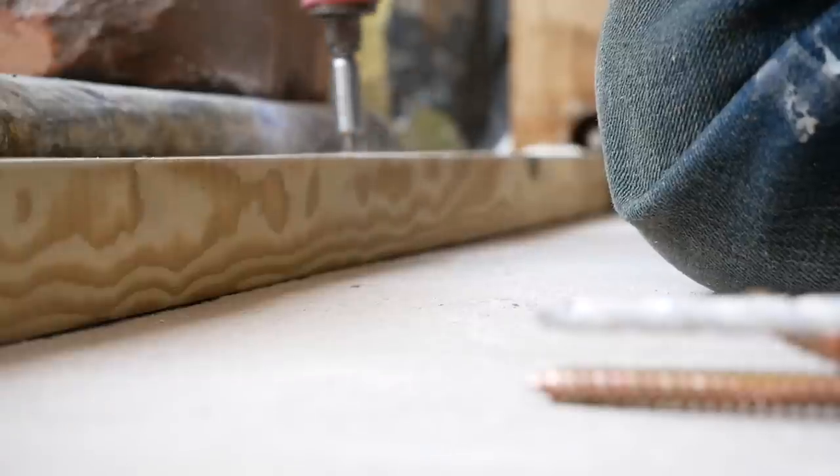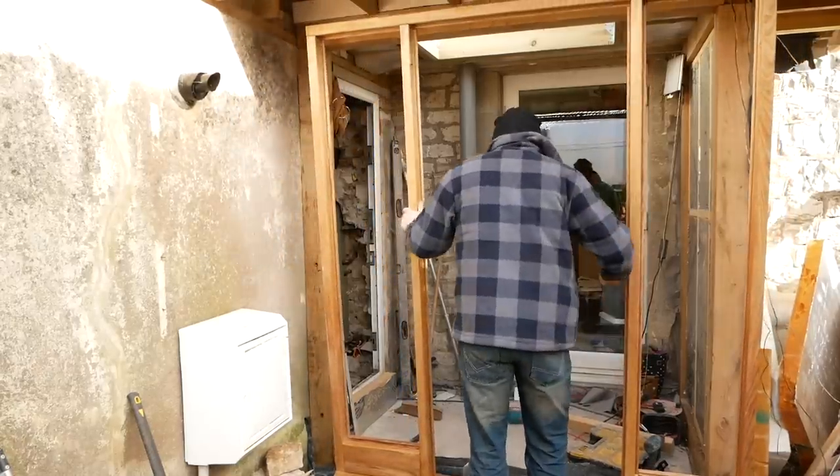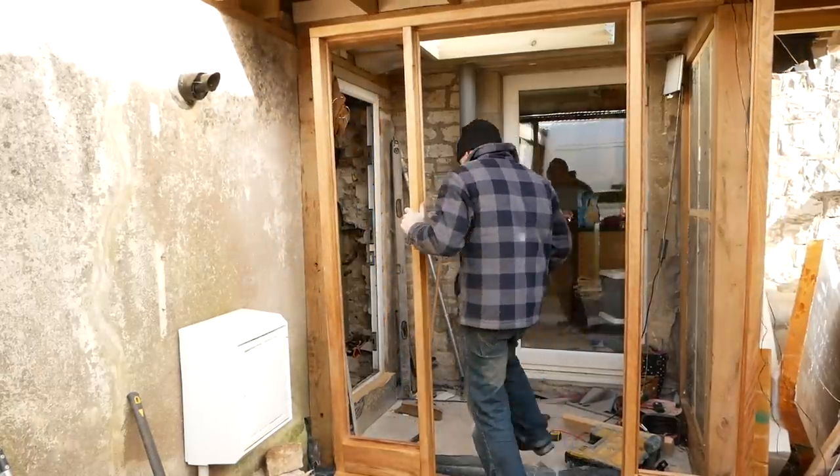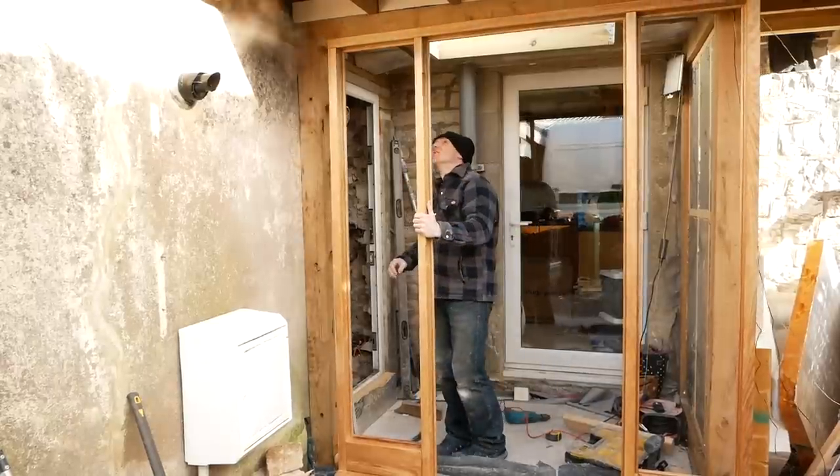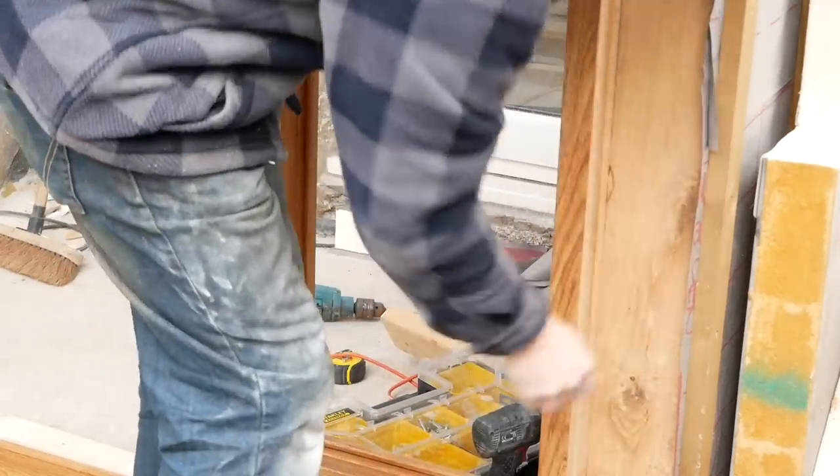The first thing to do was to get a treated sole plate down on a DPC that would form our base for it to sit on. The idea being that our door frame is going to be just sitting inside of the green oak frame that we've got.